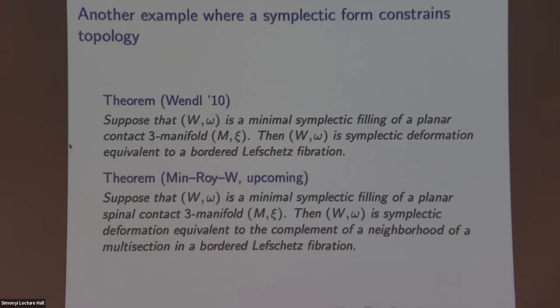And then, so we are working on the generalization of this. We show if W omega is a minimal symplectic filling of a planar spinal open book. So spinal open book is a generalization of the usual open book in the hope to decompose manifolds that are not obviously planar in the usual open book. So we show that if W is the symplectic filling of such a contact manifold, then it's deformation equivalent to the complement of a multi-section in a Lefschetz fibration. What does minimal mean? Minimal means that there's no symplectic embedded sphere of self-intersection negative one.